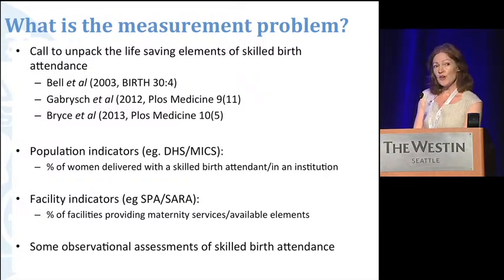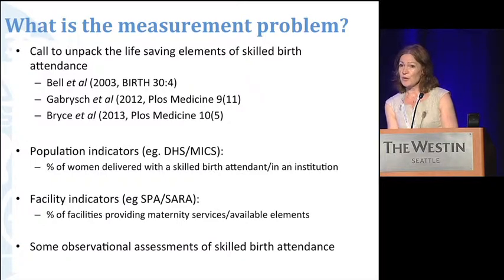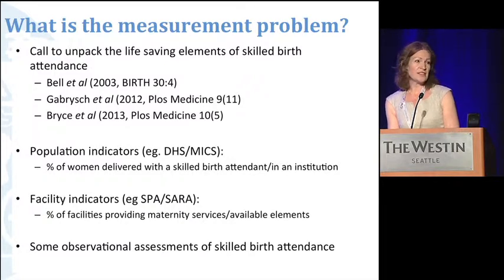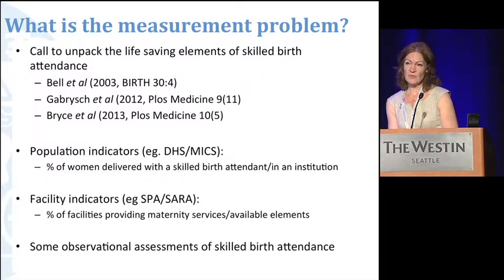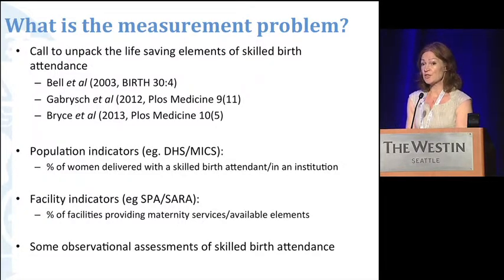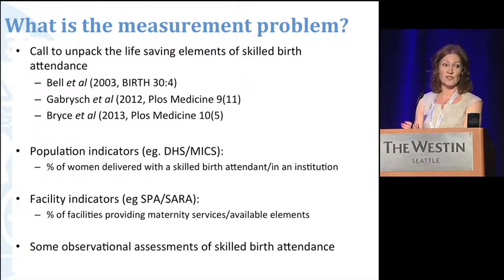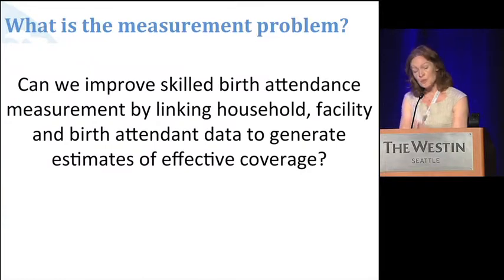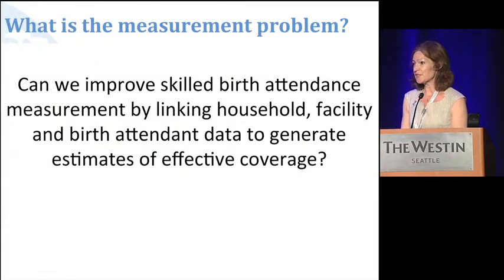Beyond what we have currently, which is on a large scale, population-level coverage of the percentage of women who had skilled birth attendants, or from a facility basis, the percentage of facilities prepared and ready to deliver maternity services — there are some smaller-scale observational studies that probably provide a better gold standard for measuring skilled attendance at birth, but they're difficult to replicate on a large scale. We wanted to ask: what can we do to improve the measurement of skilled attendance at birth by linking data sources?